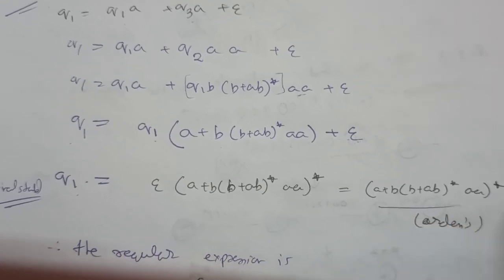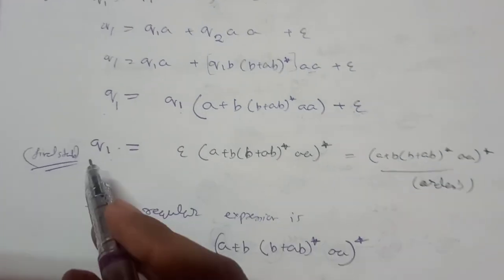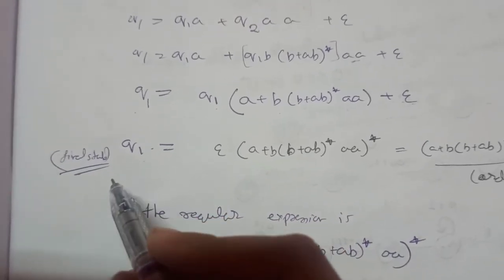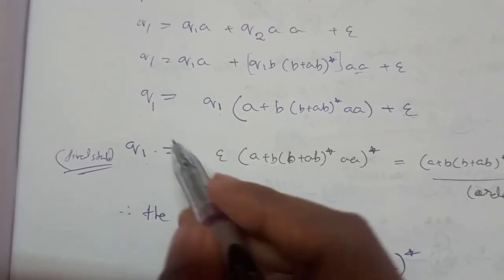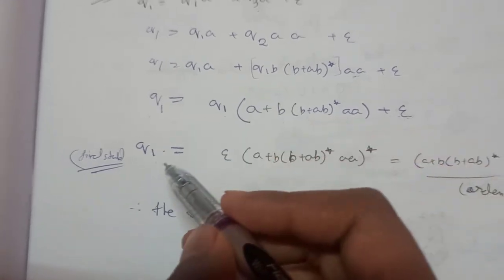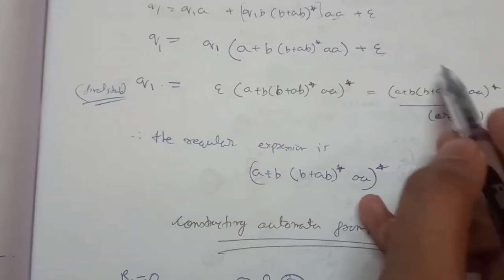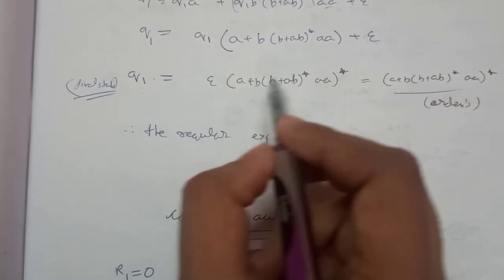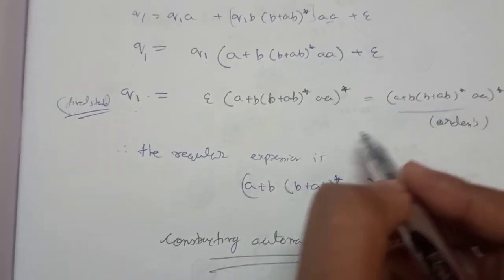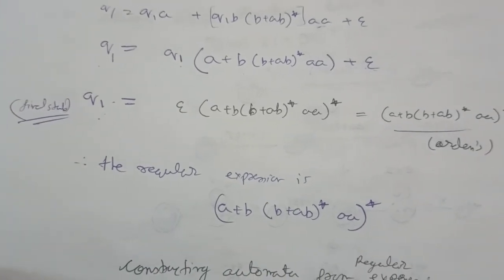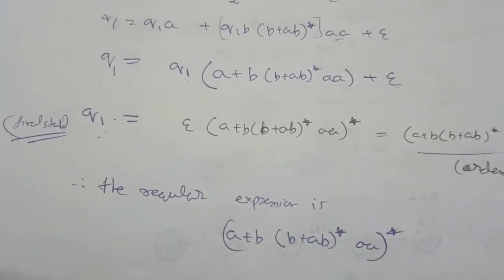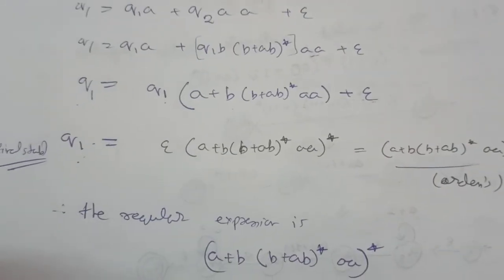This is the regular expression accepted by the automata. We do not need to substitute further into Q2 and Q3 because Q1 is our accepting state. So the regular expression accepted by Q1 is the answer for the conversion of this automata. I hope this is clear.